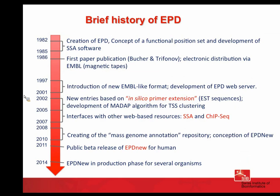Between 2008 and 2010, we created the Mass Genome Annotation Repository. We had a large collection of useful high-throughput genomics data on our servers, and at some point we decided to organize this collection in a computer-readable way so that external users can download the data in a standardized format. At that time, we also started the conception of EPD New — a completely new database with a new schema and new compilation procedures. In 2011 we published the first beta release of EPD New, and by 2014 it had become a completely productive and expanding data resource.